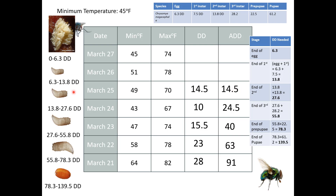Let's say I found second instar maggots on March 25th. When was that body available for colonization? We're looking for somewhere between 13.8 and 27.6 degree days. 14.5 accumulated on March 25th, so they could have reached the very beginning of that second instar on the 25th, but they need more to reach the end of it. Not even enough on the day before for 27.6 — we reach it further back. So that body was available for colonization sometime between March 23rd and March 25th.